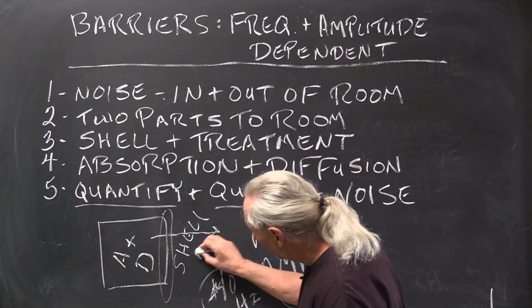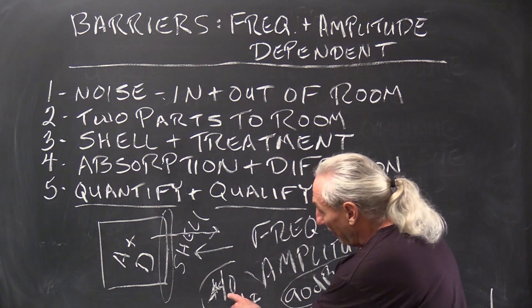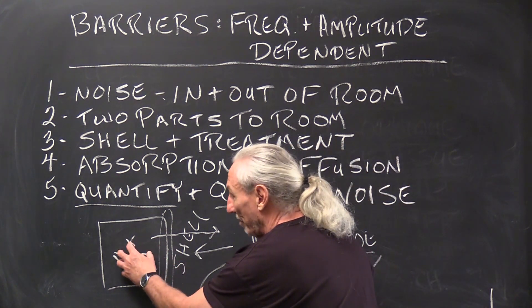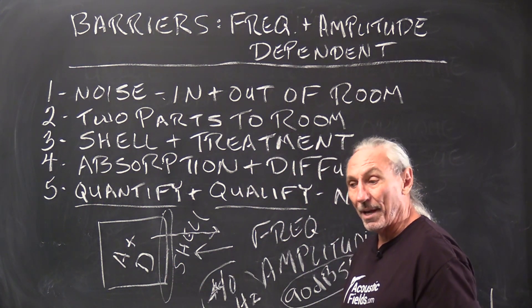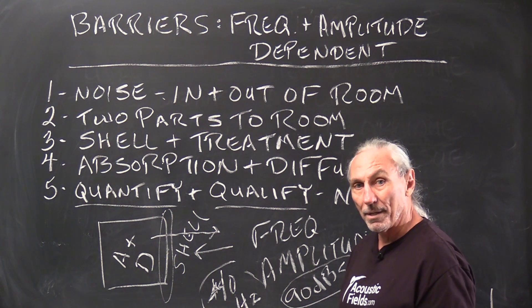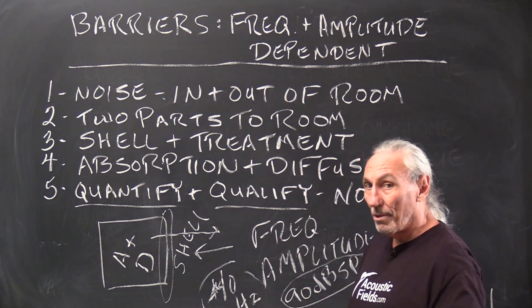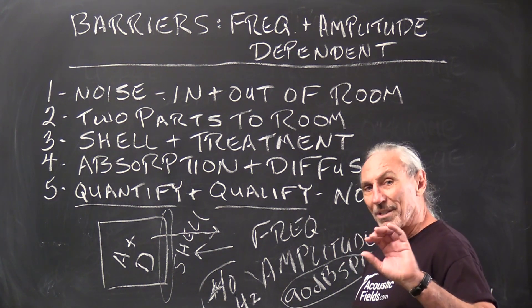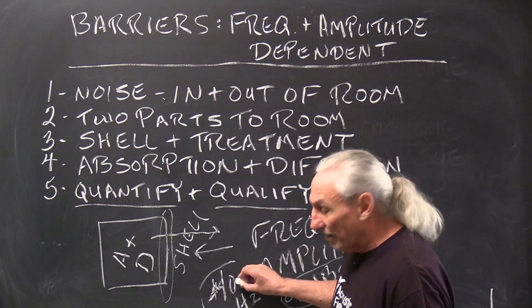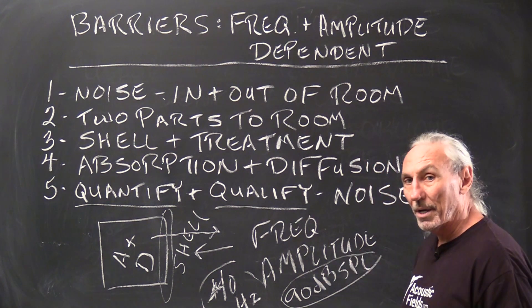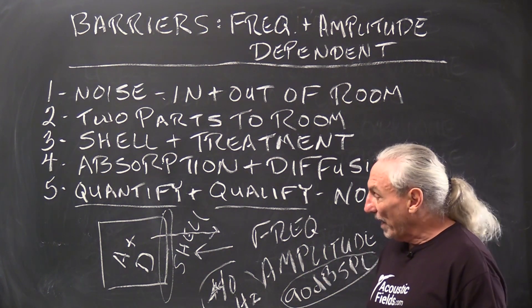Now that's just for noise getting in. We could have a 40 cycle problem inside the room. A kick drum on a drum set. And we could have neighbors that don't want to hear the kick drum. So the source is kind of irrelevant. It's the frequency of the issue and how strong it is that we have to deal with.